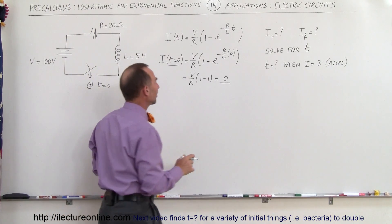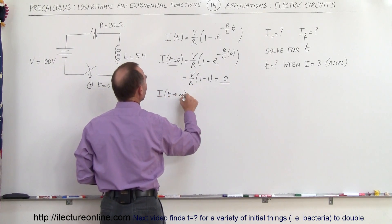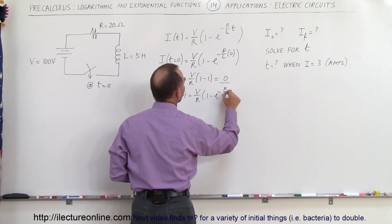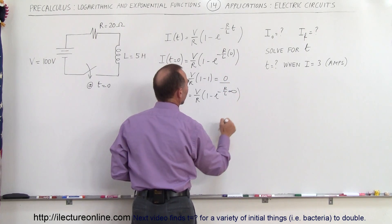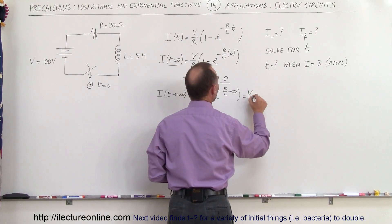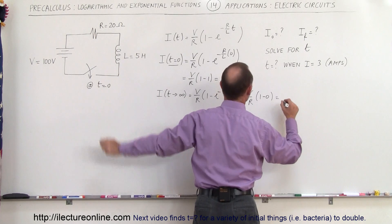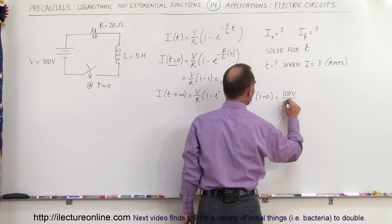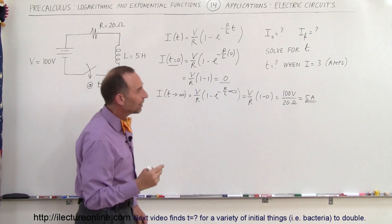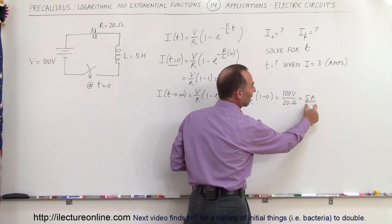What will be the final current? The final current is reached when time goes to infinity. So I as time approaches infinity equals V over R times (1 minus E to the minus R over L times infinity). This negative exponent becomes 1 over E to the infinity, which is 0. So this equals V over R times (1 minus 0), which equals V over R. With V equal to 100 volts and R equal to 20 ohms, the final current is 5 amps.